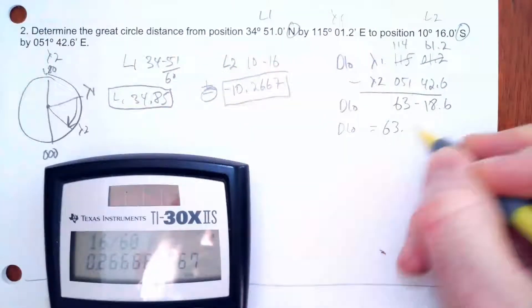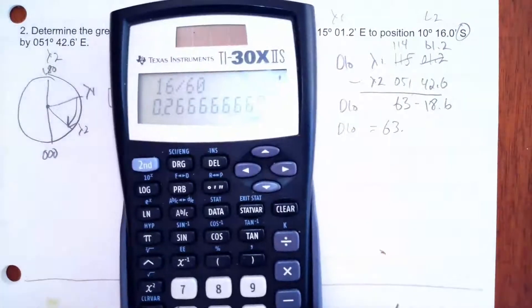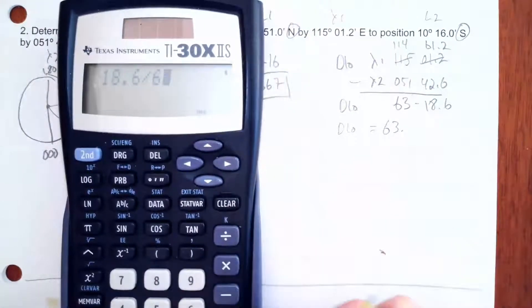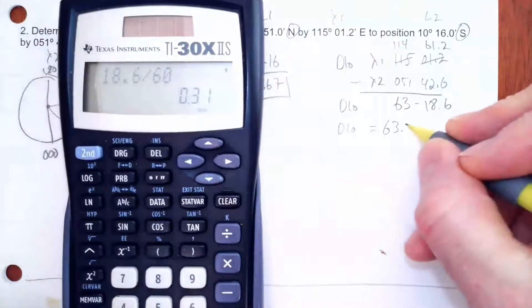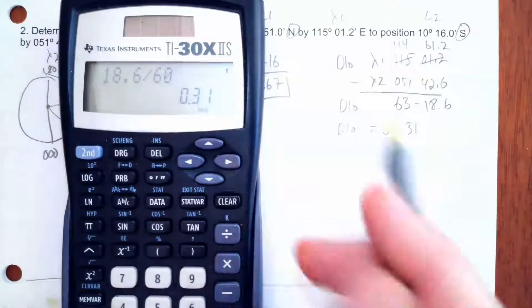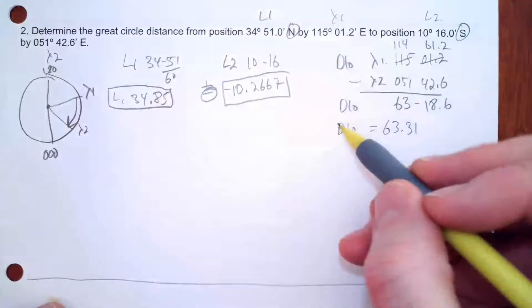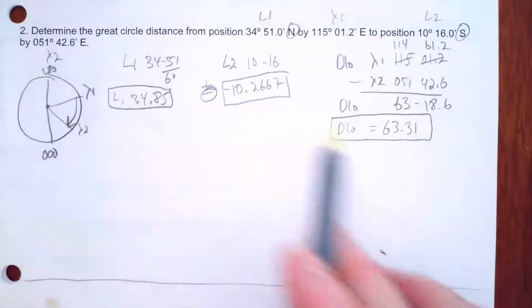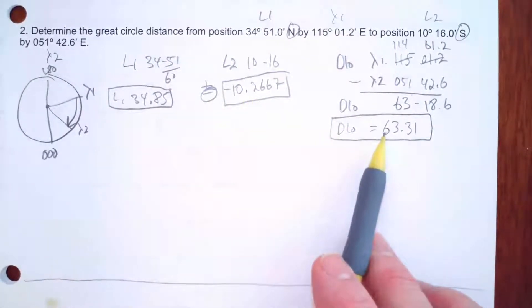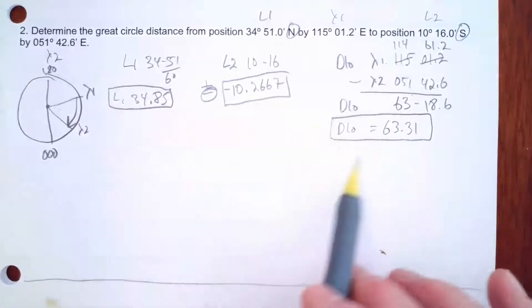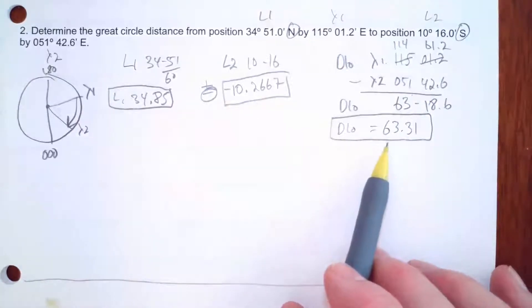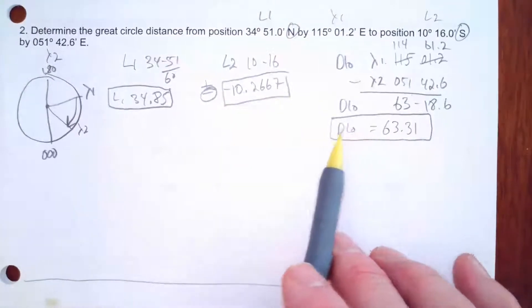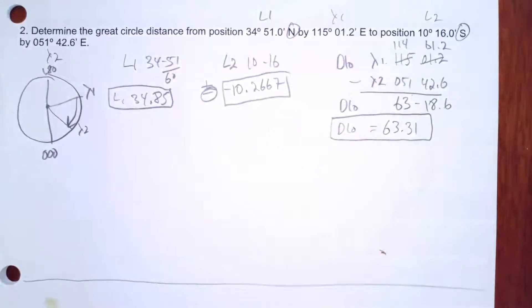D Low is 63° 18.6'. Taking 18.6 divided by 60 gives 0.31, so D Low = 63.31°. On the exam in TNAV2 I want to see these three numbers written out to four decimal places. If you don't show me that, you won't get credit for this problem.